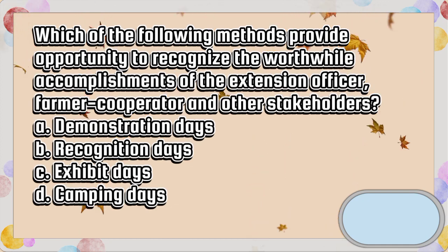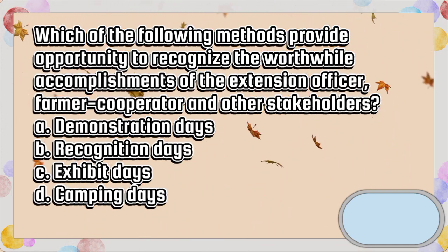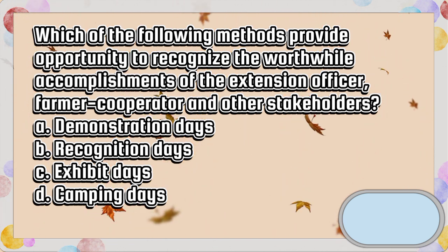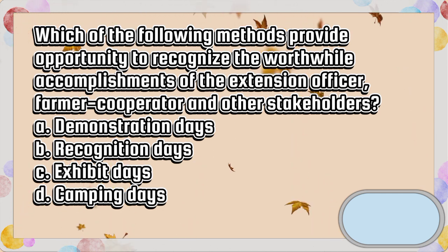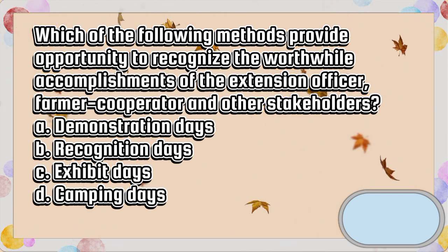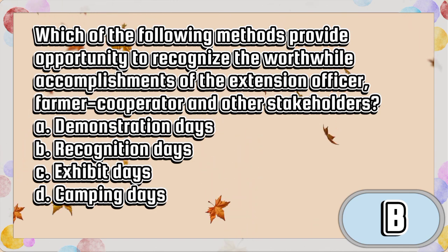Which of the following methods provide opportunity to recognize the worthwhile accomplishments of the extension officer, farmer cooperator, and other stakeholders? A. Demonstration days. B. Recognition days. C. Exhibit days. D. Camping days. The answer is letter B.